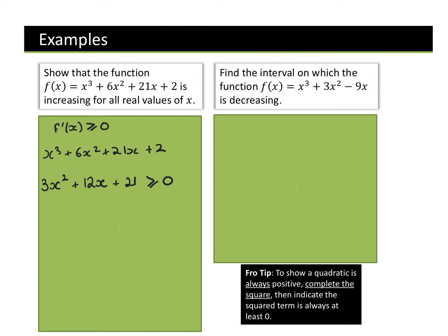This is where Chapter 1 proof comes in handy, because we're showing that this is positive for all real values of x. We need to complete the square. First of all, I'm going to divide everything by 3 — luckily everything is a factor of 3. Complete the square: (x + 2)² − 4 + 7 ≥ 0, so (x + 2)² + 3 ≥ 0.